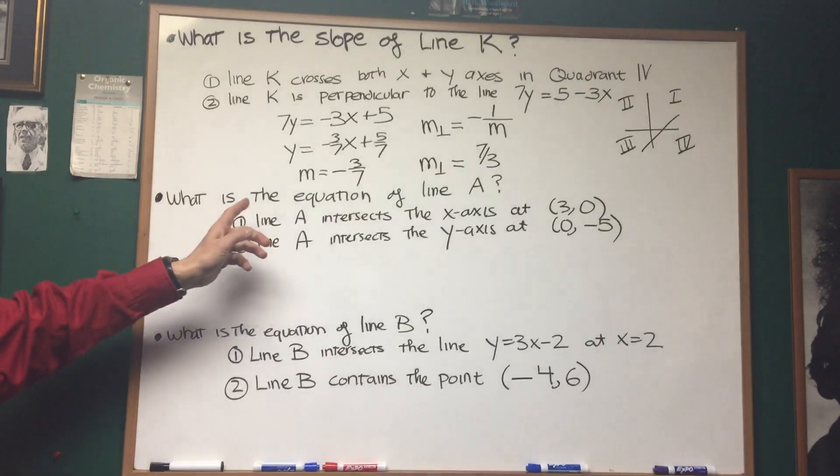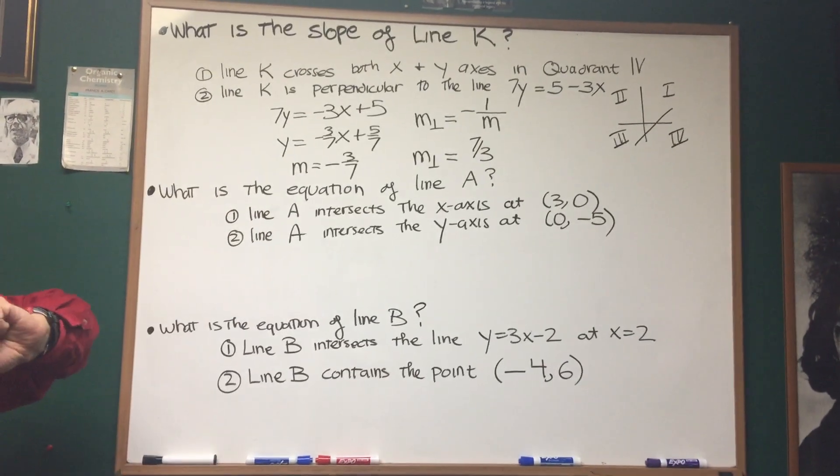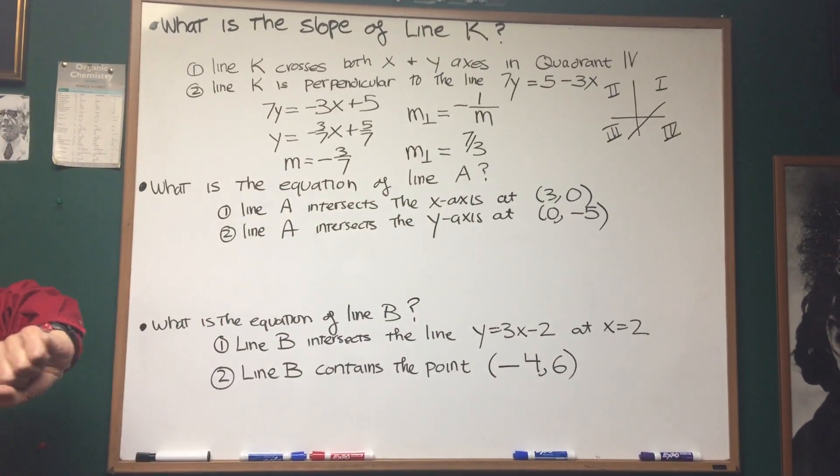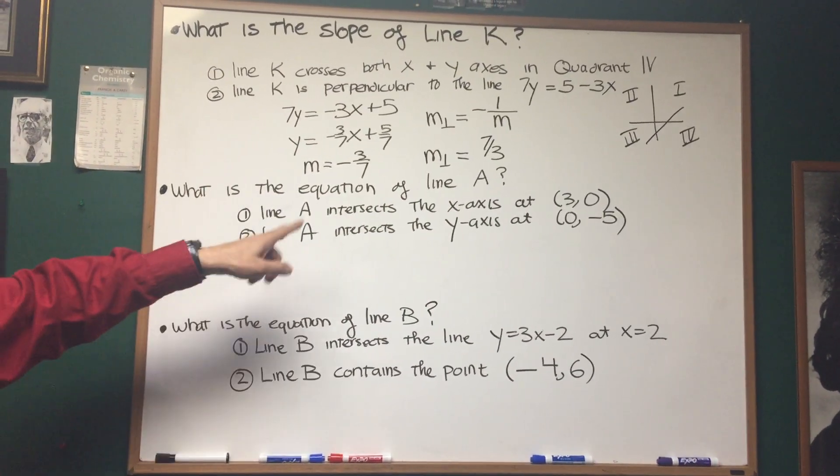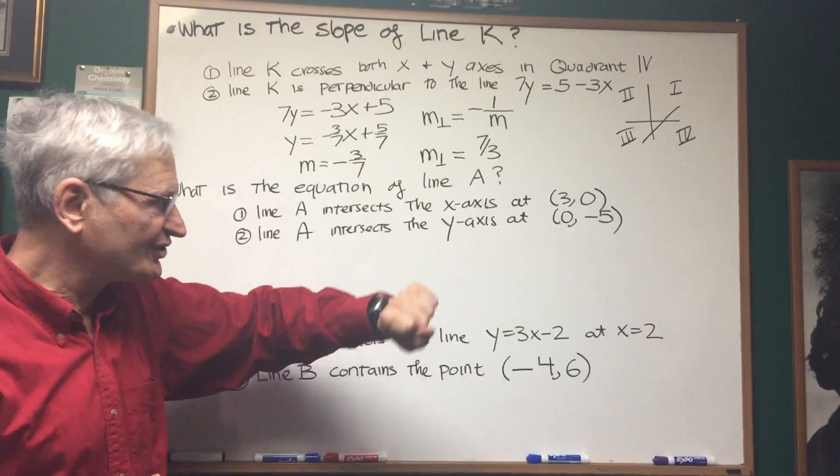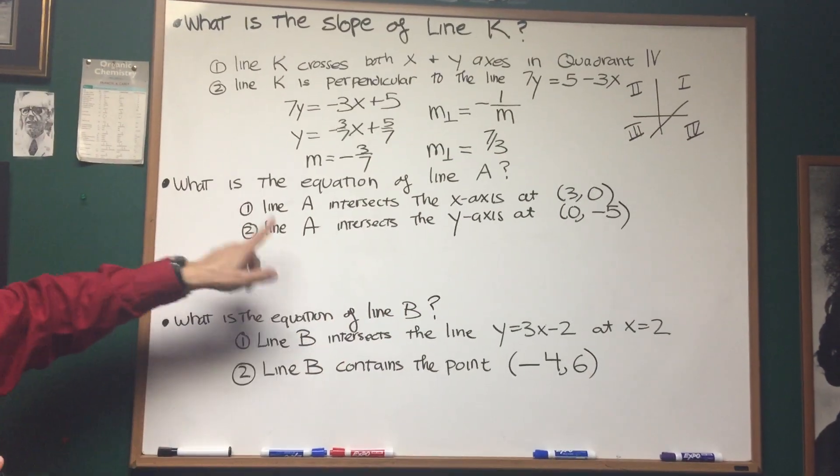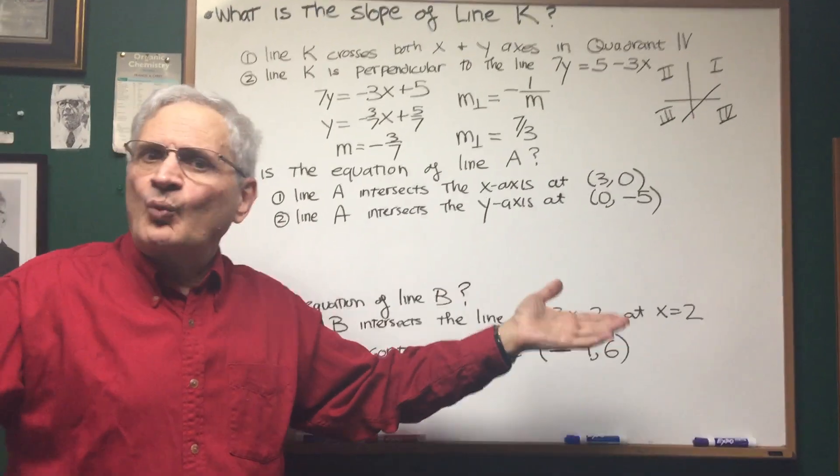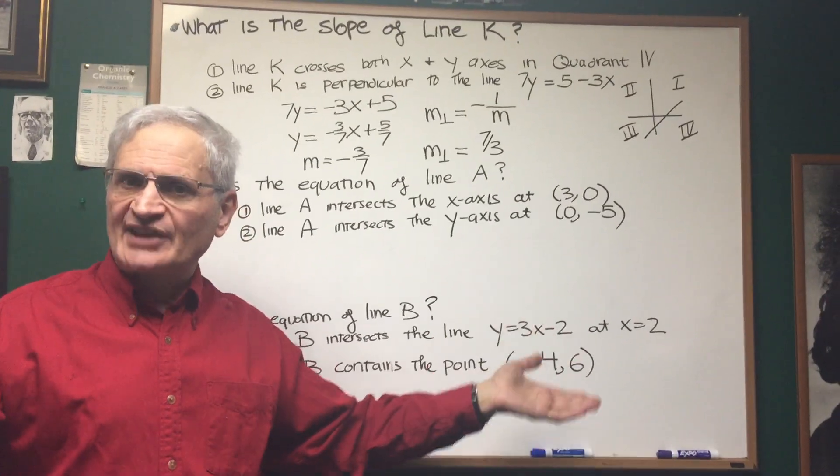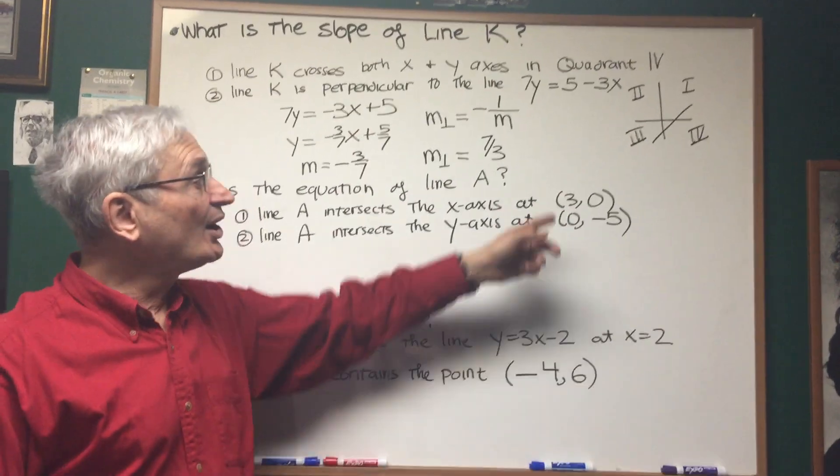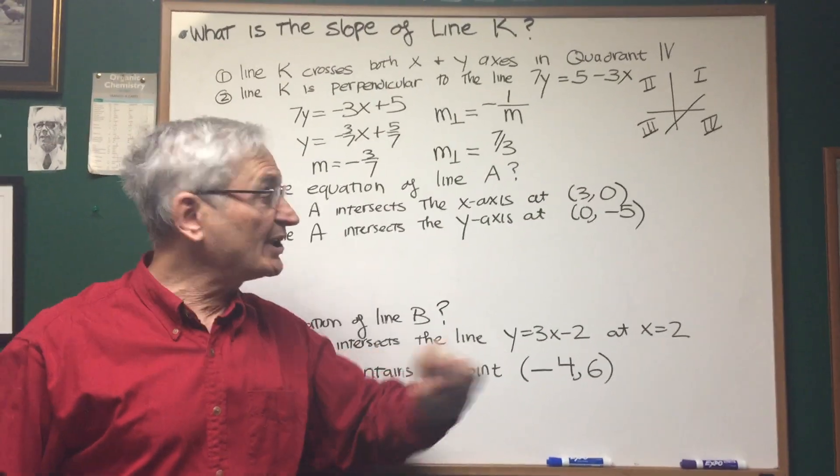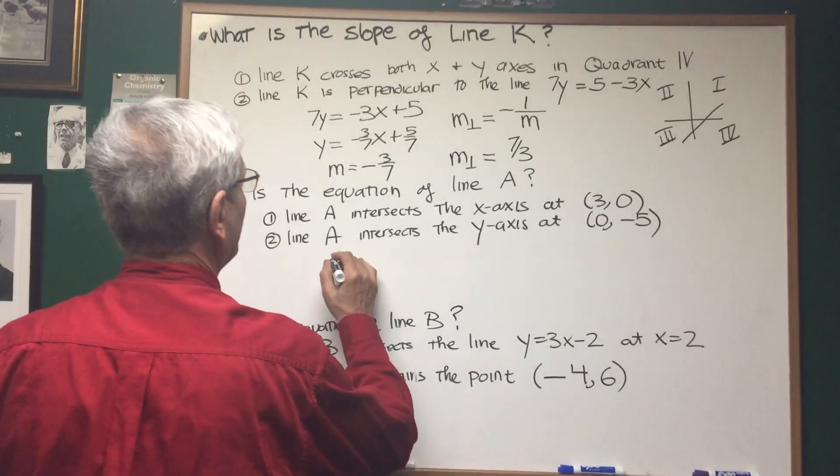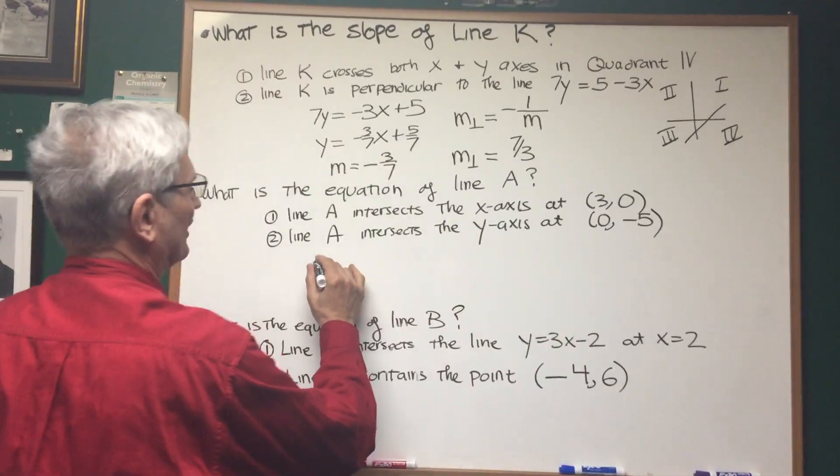Let's go on to the second problem here. What is the equation of line A? Statement 1: Line A intersects the x-axis at (3,0). Statement 2: Line A intersects the y-axis at (0,-5). Well, what information do we need to establish the equation of a line? Two points are sufficient. We have two distinct points. That's all we need.